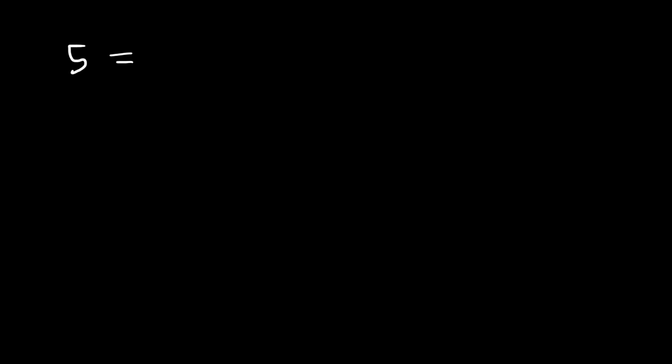In this video we're going to talk about the difference between prime numbers and composite numbers, and also go over prime factorization — how to factor large numbers into small numbers that are composed of prime numbers. So first, what is the difference between a prime number and a composite number? A prime number like 5 can be broken down into two factors: one and itself.